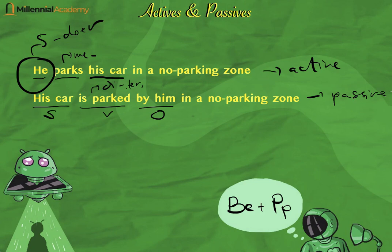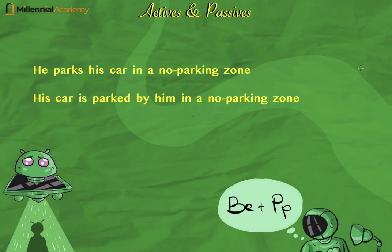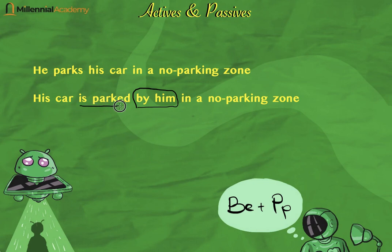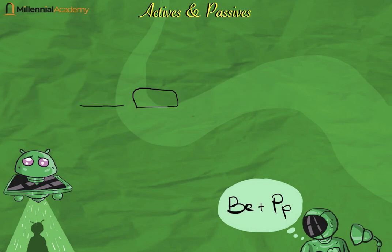You can see the doer is the same but in the passive sentence the object becomes the subject — not the subject itself. In TOEFL, it can be confusing when there is no object. When 'by him' is present it is fairly clear — you can tell the sentence is passive because of 'by'. But what if the sentence looks like this: 'His car parked in a no parking zone'?